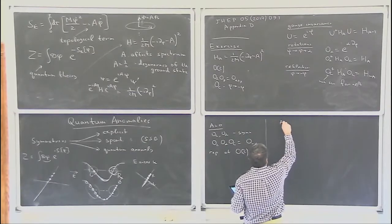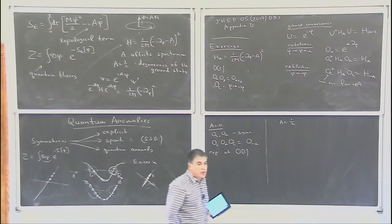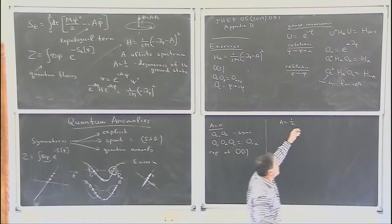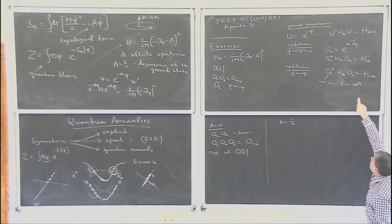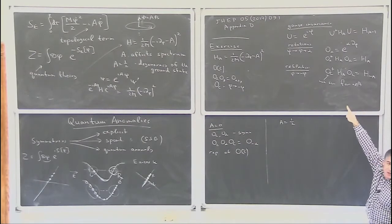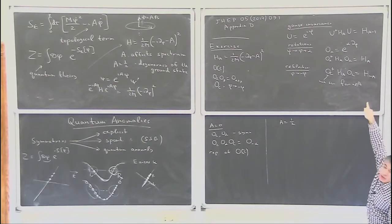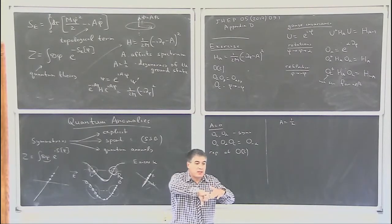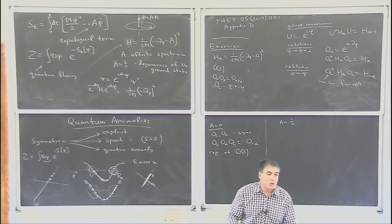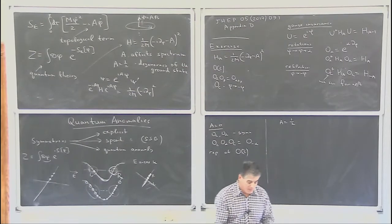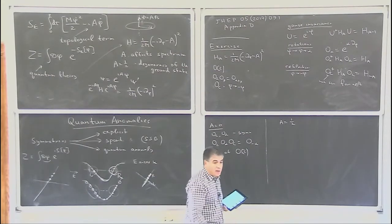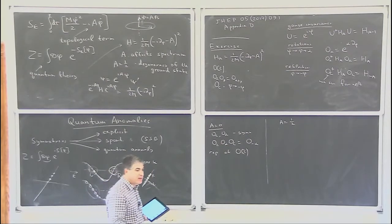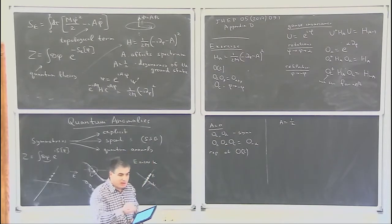Now consider A equals one-half, half of the flux quantum. If you reflect, A goes to minus A, so one-half goes to minus one-half — a change of one, which is not observable by gauge invariance. So flux plus one-half is equivalent to flux minus one-half. Therefore O_C is not a strict symmetry, but let's introduce O_C-tilde = O_C times U†, where U = e^(i phi). This IS a symmetry. But when you compute O_C-tilde O(alpha) O_C-tilde, you find it equals O(-alpha) times a phase — it's not a true representation of O(2), it's a projective representation.